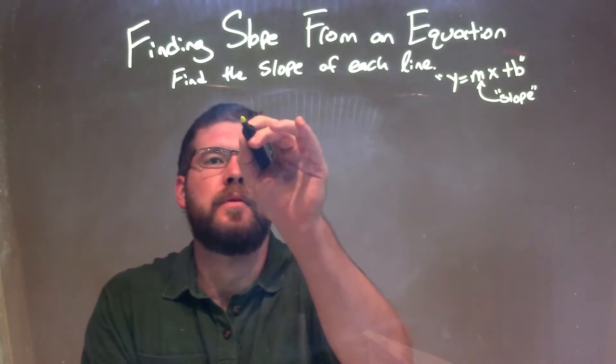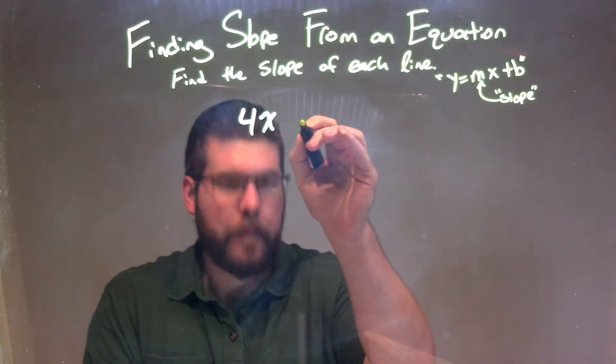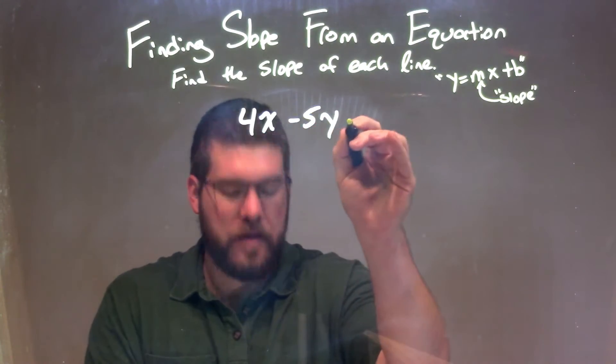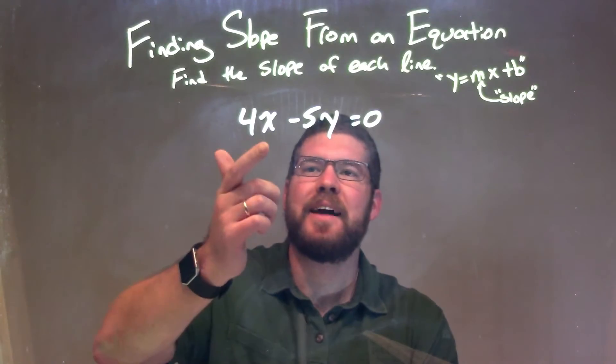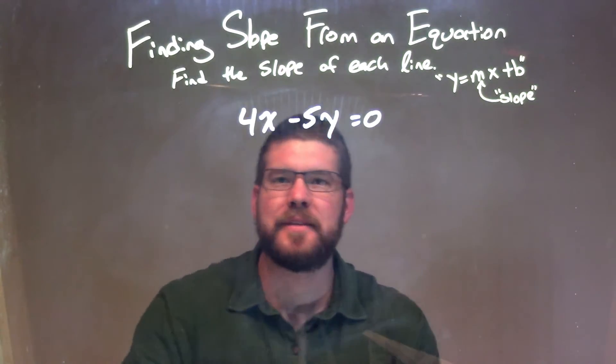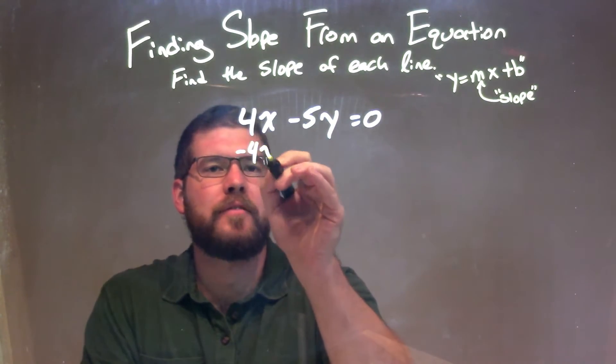So if I was given this equation, 4x minus 5y is equal to 0. The key thing here is I need to isolate the y, get y by itself. So to do that, I'm subtracting 4x to both sides.